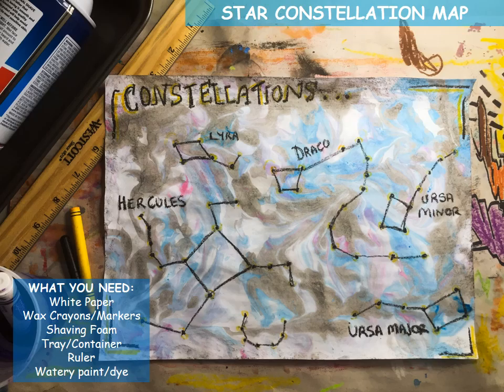Hello, my adventurous artists! Today we're going to focus on creating our very own star constellation map. There are a few things you'll need, so grab a pen and pencil and write these down: white paper, wax crayons or markers depending on what you have available, shaving foam — try and get the cheap stuff — a tray or container that can fit your paper inside, a ruler, and watery paint or dye. Watch the video, take some notes so you know what you need, and let's get started.